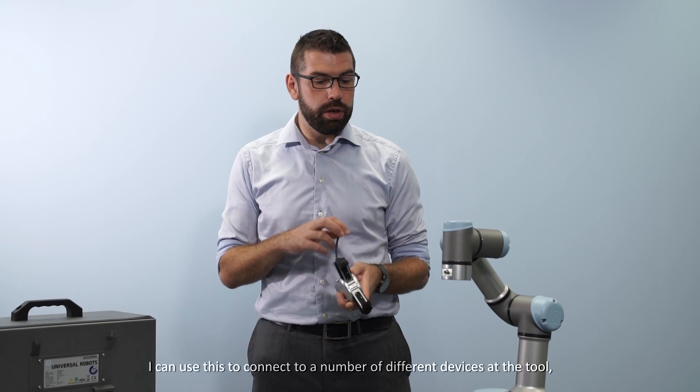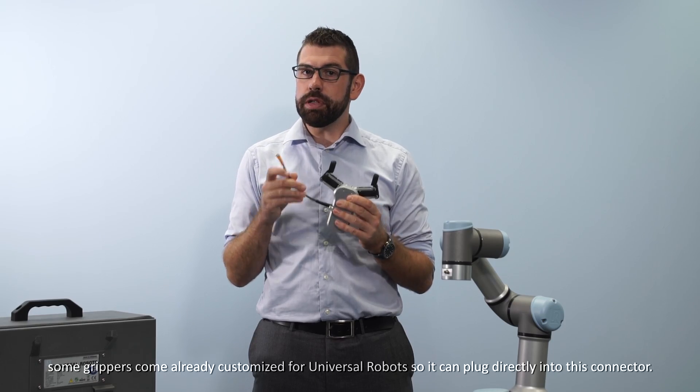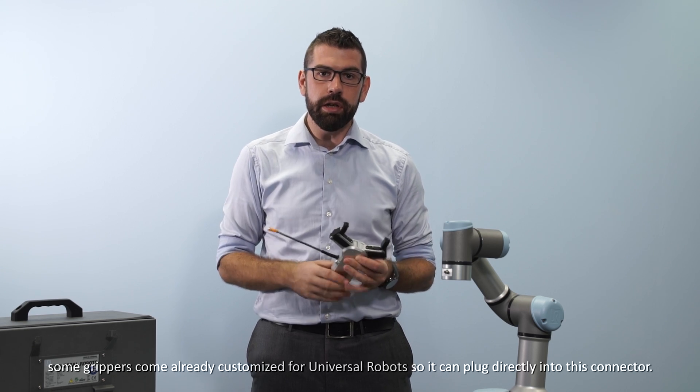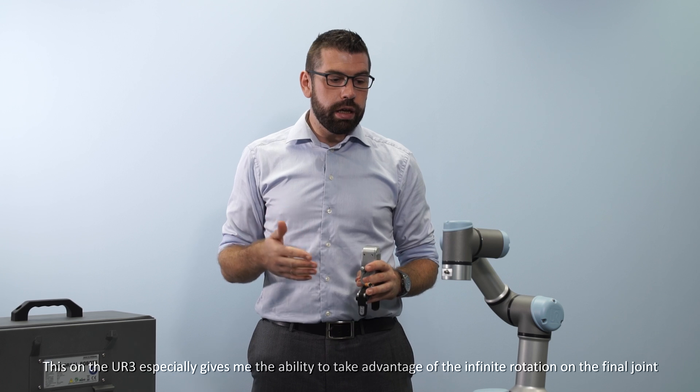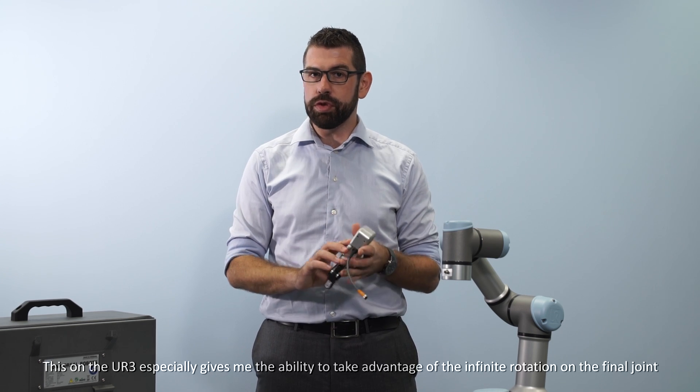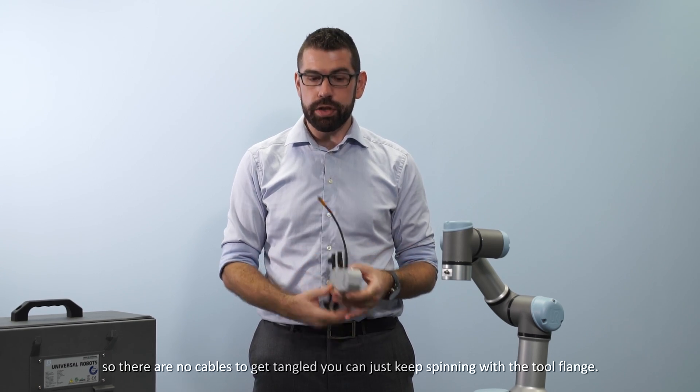I can use this to connect to a number of different devices at the tool. Some grippers come already customized for universal robots so can plug directly into this connector. This on the UR3 especially gives me the ability to take advantage of the infinite rotation on the final joint so there are no cables to get tangled it can just keep spinning with the tool flange.